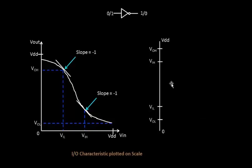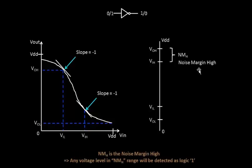Now we have well-defined values, and these go as part of the specifications of a chip. Let's talk about the range at the output. This particular range for logic 1 will be called noise margin high (NMH). Noise margin high says that any voltage level — whether present at the input or the output side — that lies in the range of VIH to VOH will be detected as logic 1.